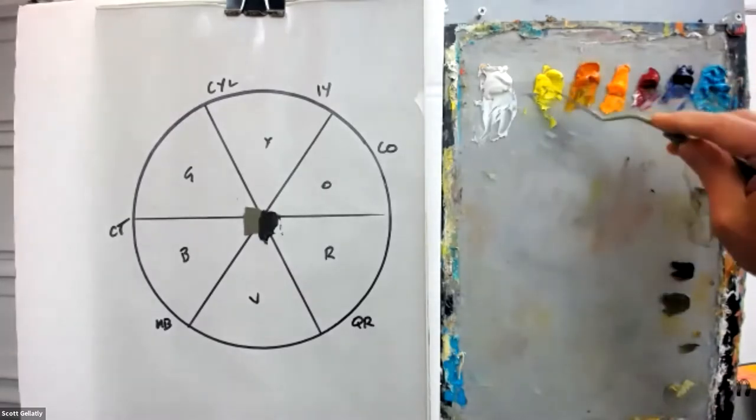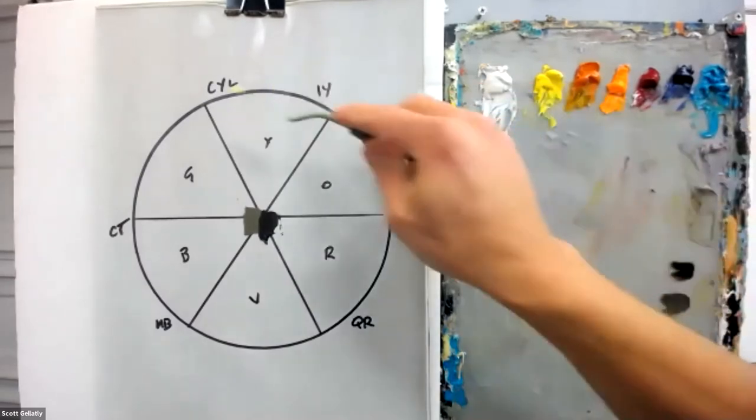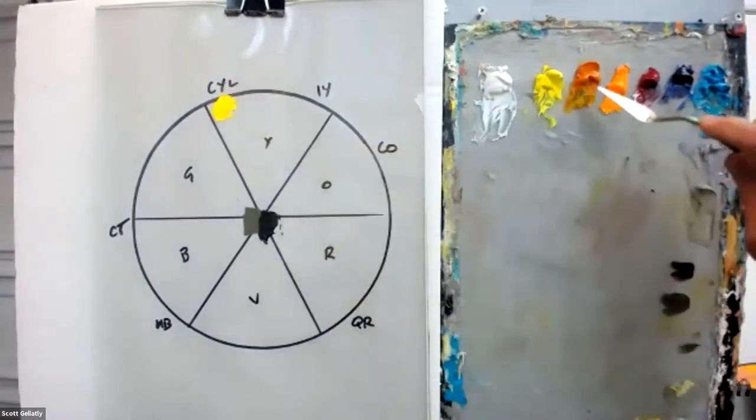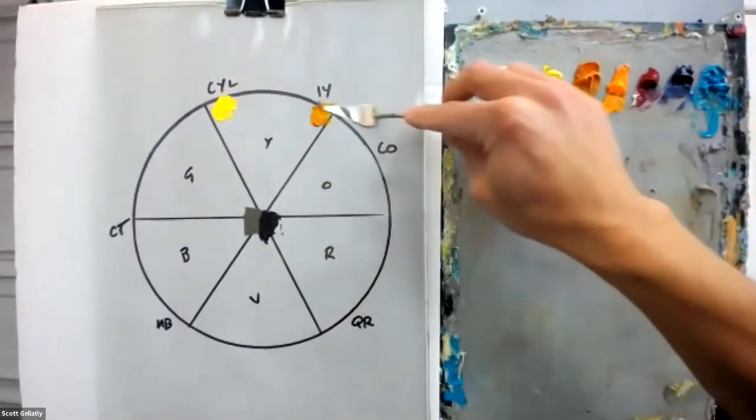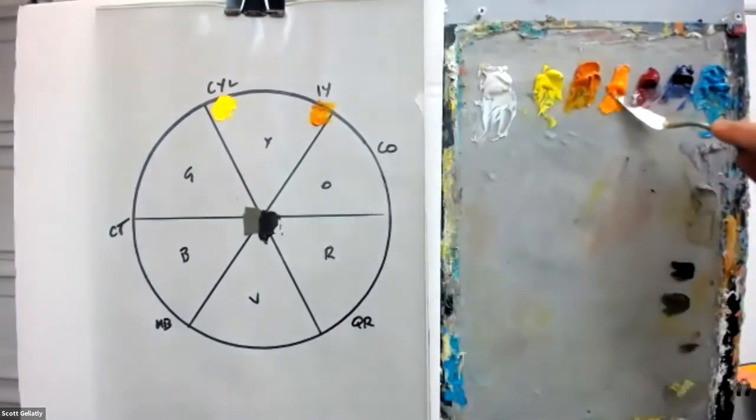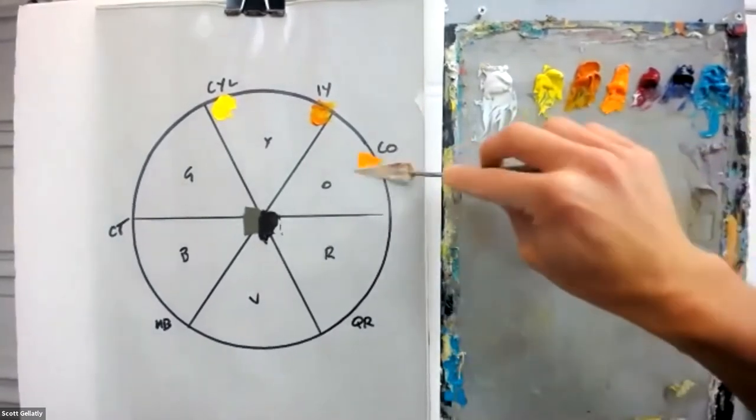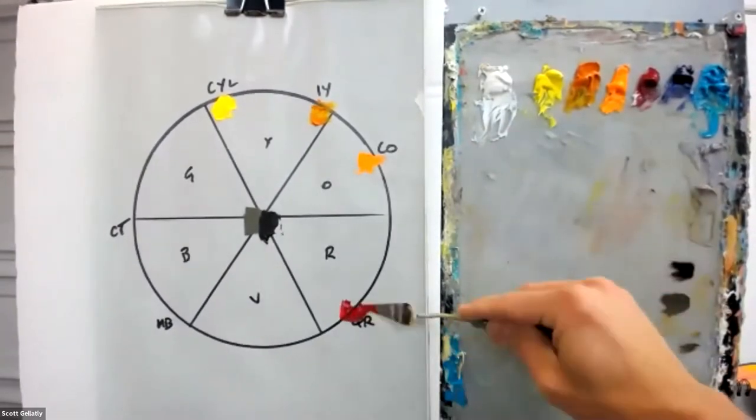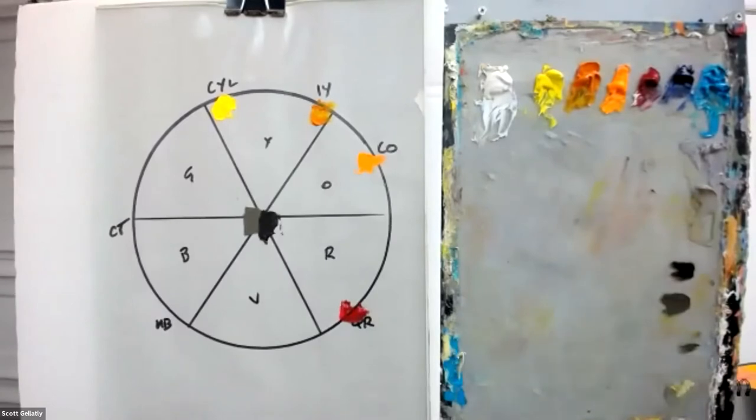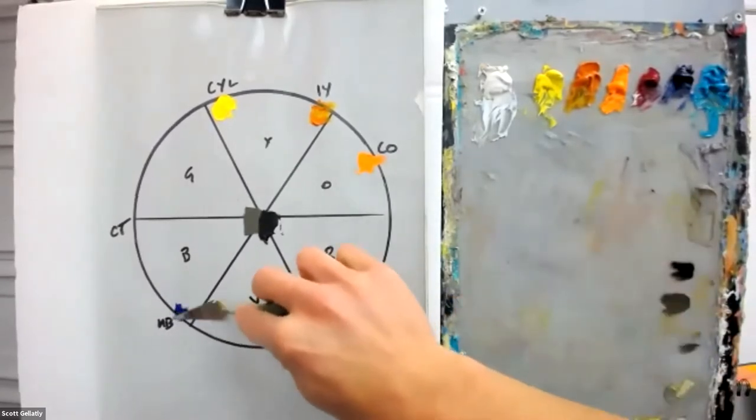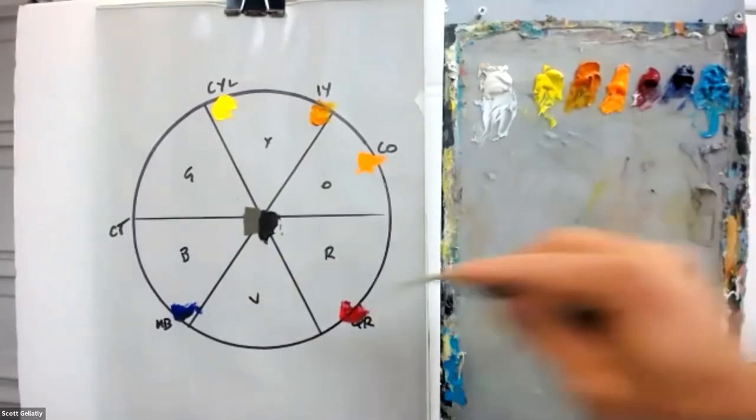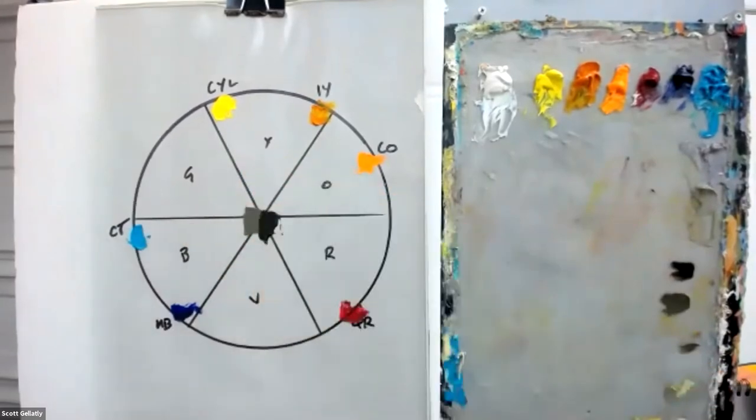And so I think about this as I've created my palette of colors. So I've got my cad yellow light, Indian yellow, cadmium orange, quinacridone red, ultramarine blue, and cobalt teal.